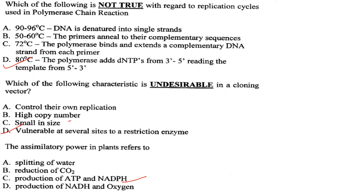Which of the following is not true with regard to the replication cycle in PCR? At 90-96°C DNA is denatured into single strands. At 50-60°C primers anneal to complementary sequences. At 72°C polymerase extends complementary strands. The statement that the polymerase adds dNTPs at 80°C reading the template from 5' to 3' is not true.